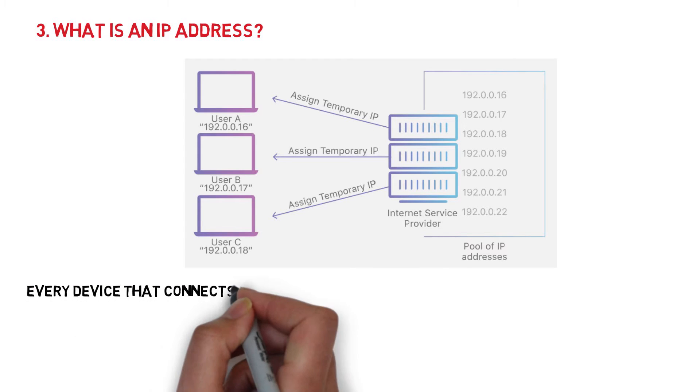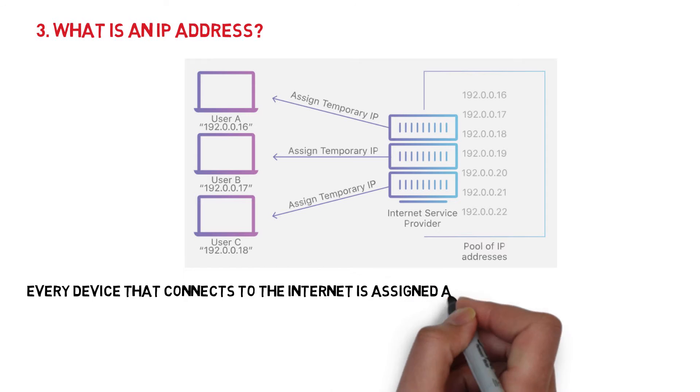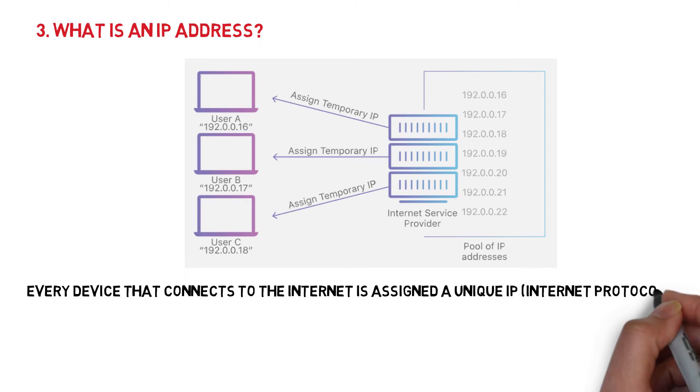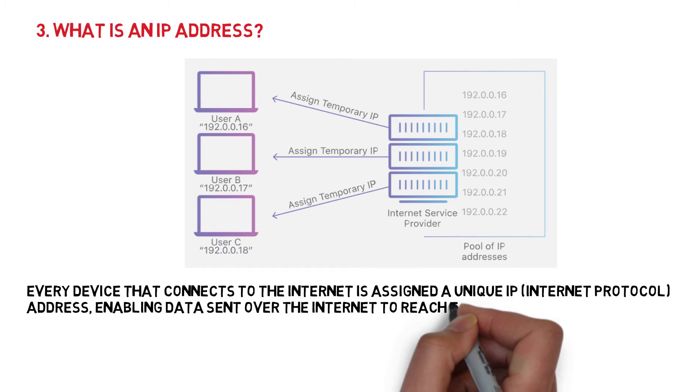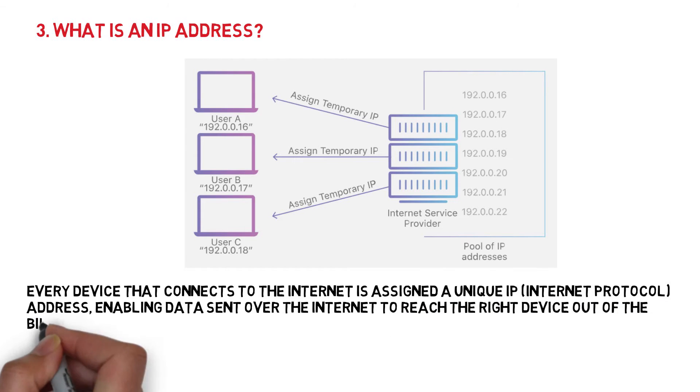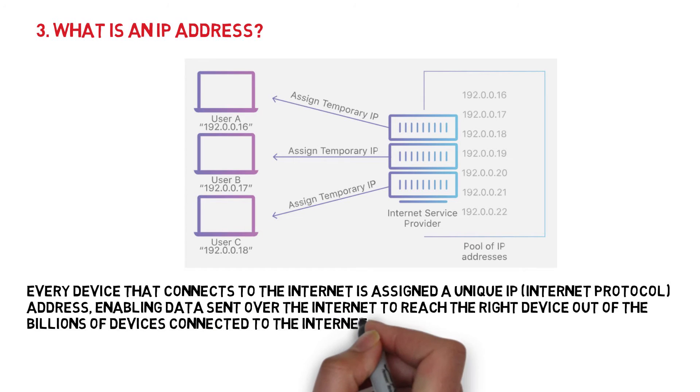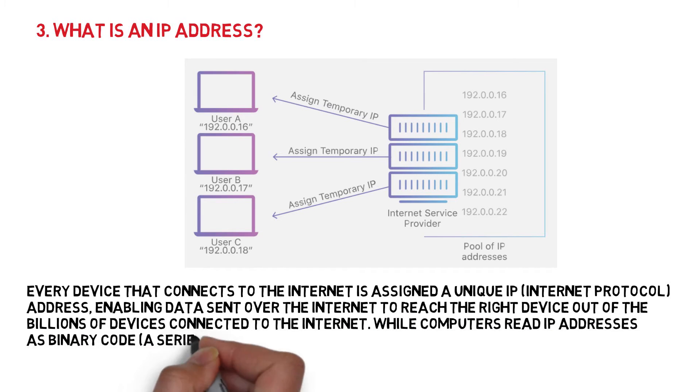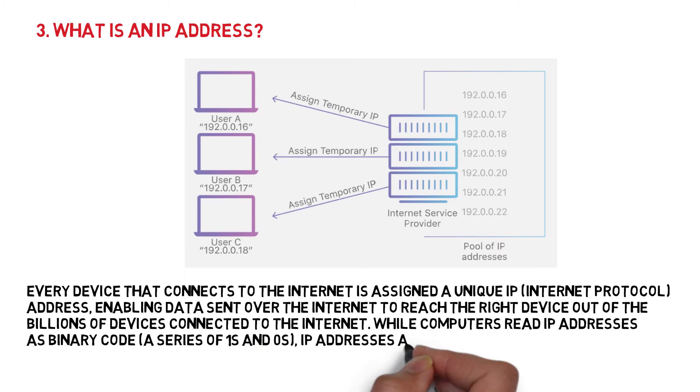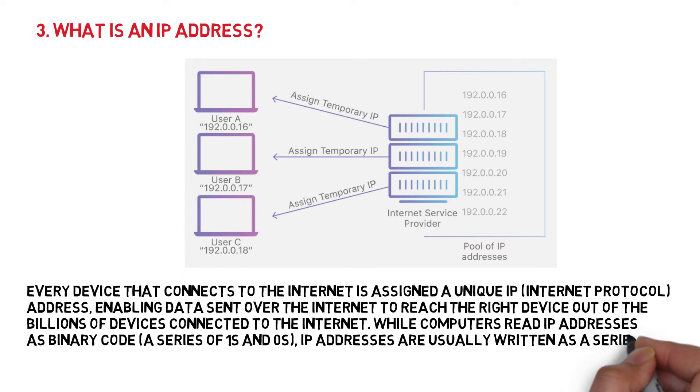What is an IP address? Every device that connects to the internet is assigned a unique IP address, enabling data sent over the internet to reach the right device out of billions of devices connected to the internet. While computers read IP addresses as binary code, a series of ones and zeros, IP addresses are usually written as a series of alphanumeric characters.